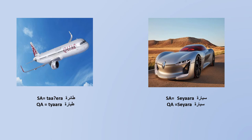Moving on to more vocabulary: car and airplane. Car is 'siyara' in both standard Arabic and Qatari dialect. Airplane is 'faa'ira' in standard Arabic, but in Qatari dialect we say 'tayyara.' So 'tayyara' for airplane in Qatari dialect, and 'siyara' for car in both.